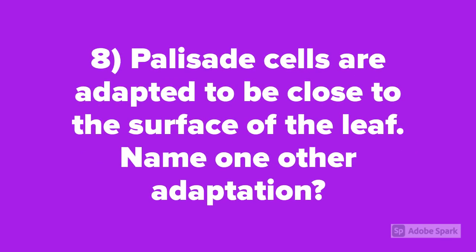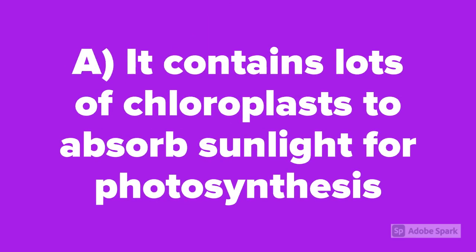Question number 8: Palisade cells are adapted to be close to the surface of the leaf. Name one other adaptation of palisade cells. They will contain lots of chloroplasts to absorb sunlight for photosynthesis.